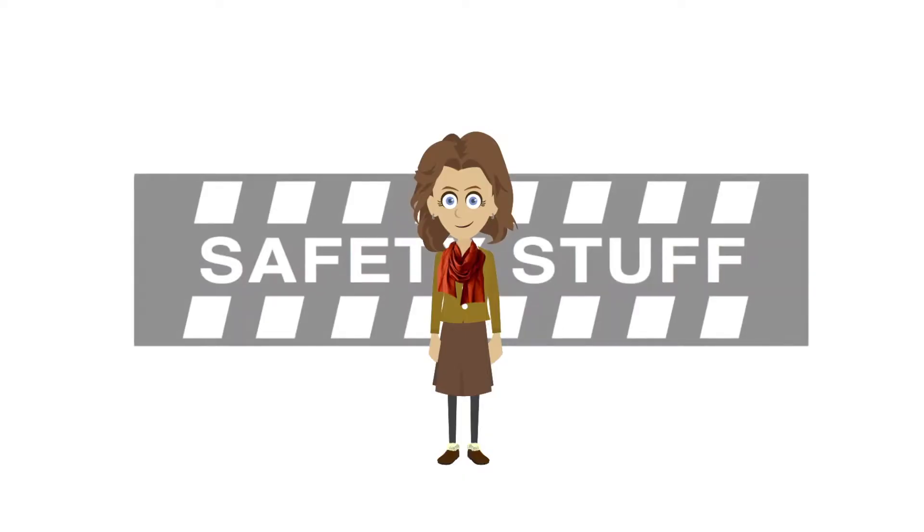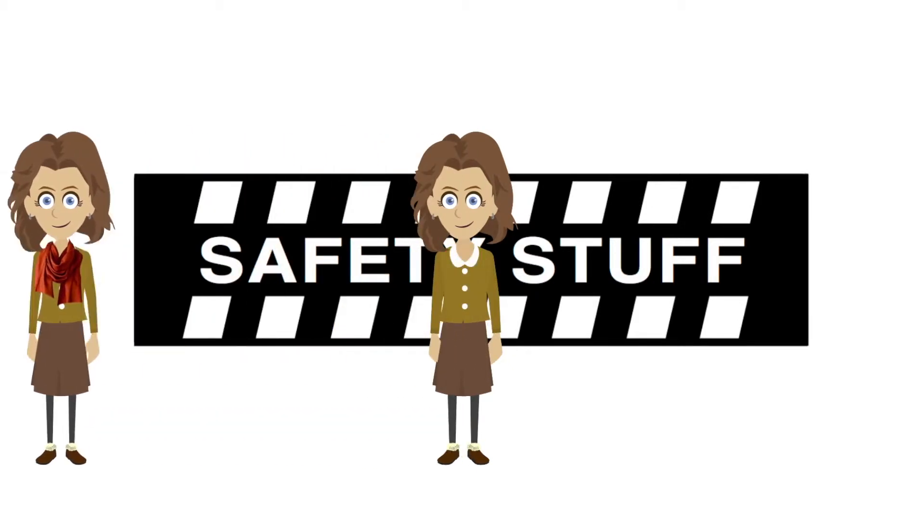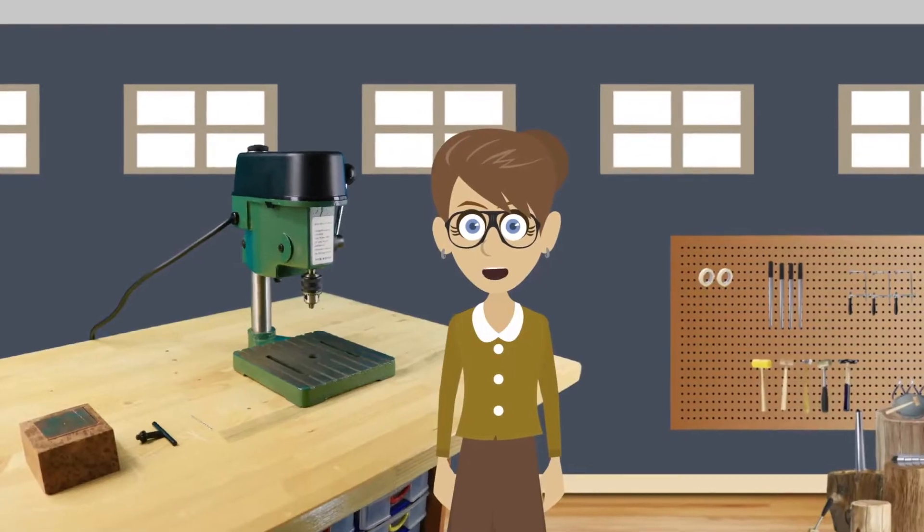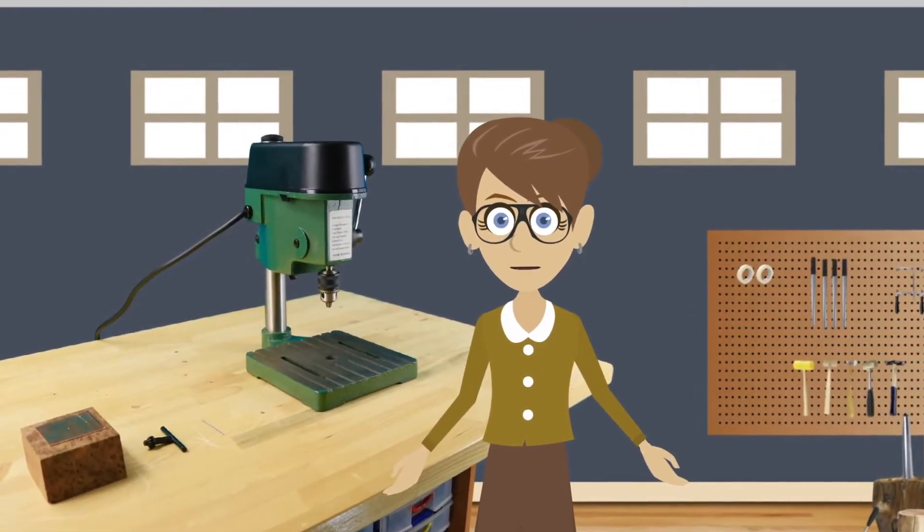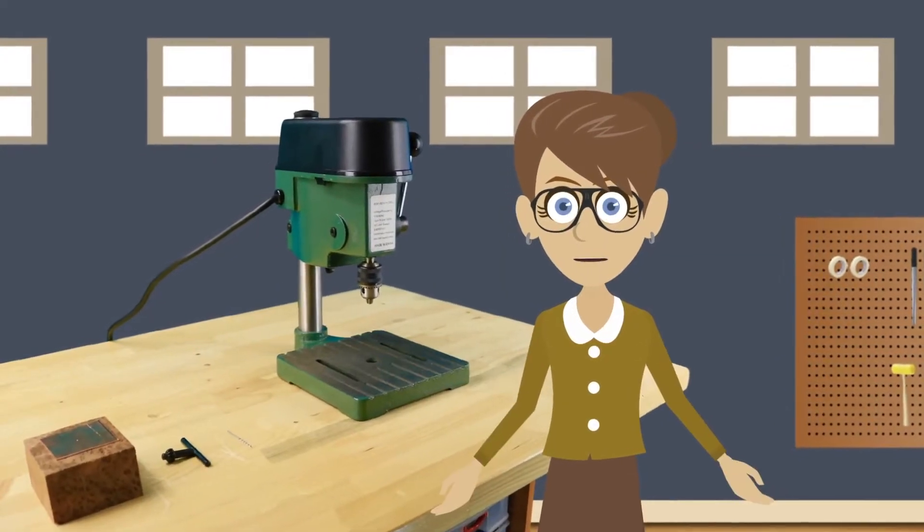Before operating any rotary tool, always remove any loose jewelry or clothing, tie your hair back, and wear protective eyewear. Checking for a wobble is as simple as inserting a small drill bit and observing the rotation. If it wobbles, you've got a wobble.